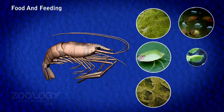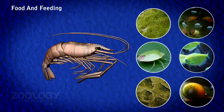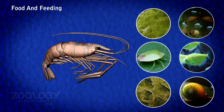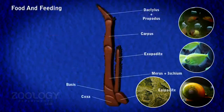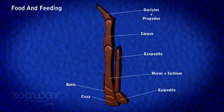The animal feeds on aquatic weeds and also on small aquatic animals such as snails, insects, dead fish, and debris from the bottom. It feeds at night, being more active at dawn and dusk than at any other time.